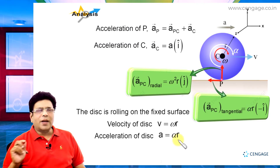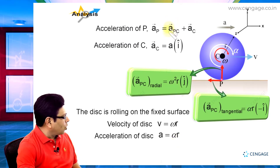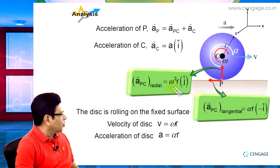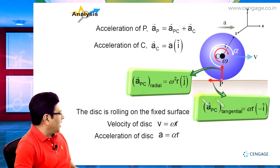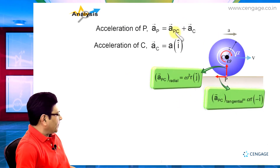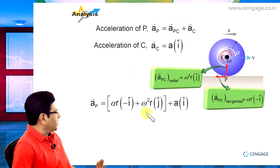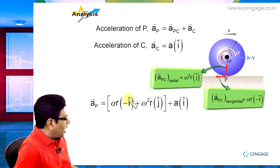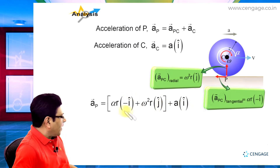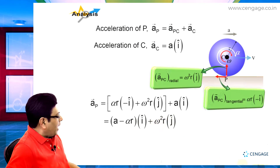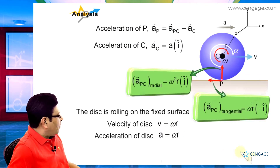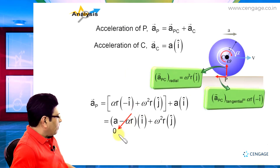Now let us substitute the values. Writing the acceleration of P with respect to C with both components together, we get: acceleration of P equals (a minus alpha r) i-cap plus omega squared r j-cap. Since the rolling constraint gives a equal to alpha r, the i-cap term cancels to zero.